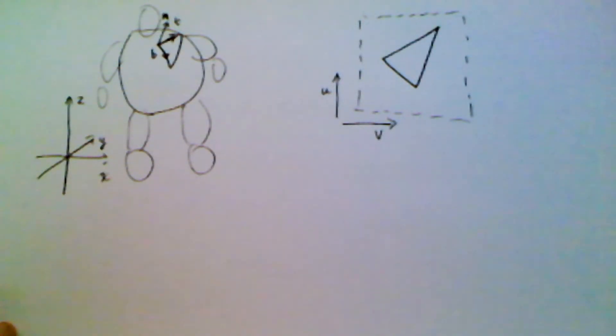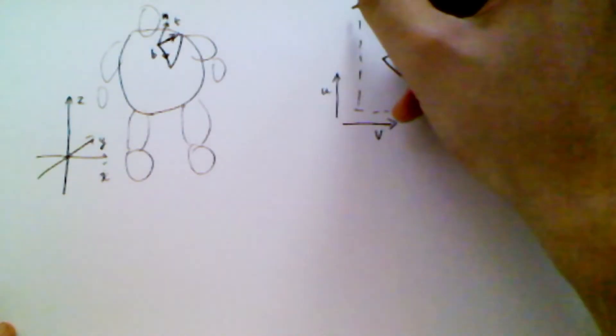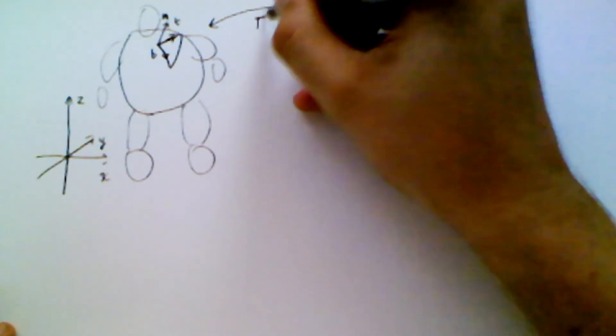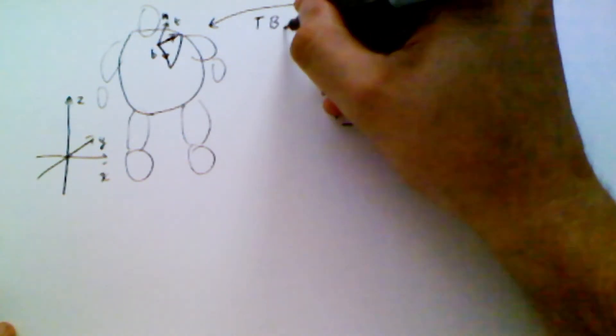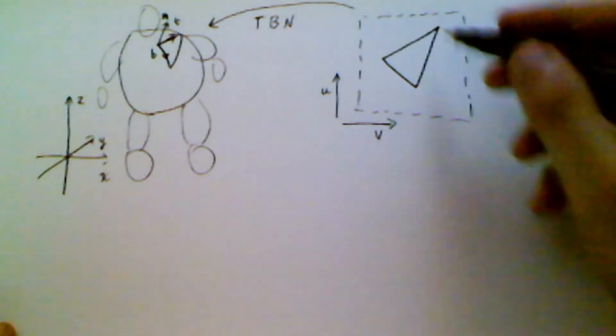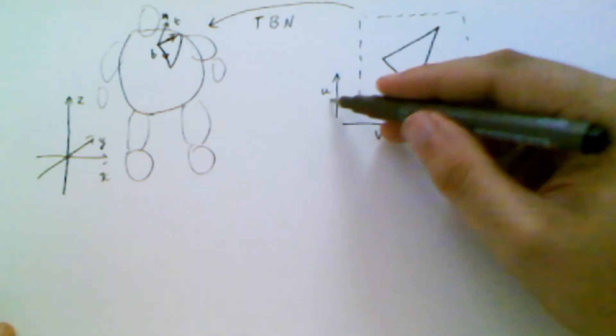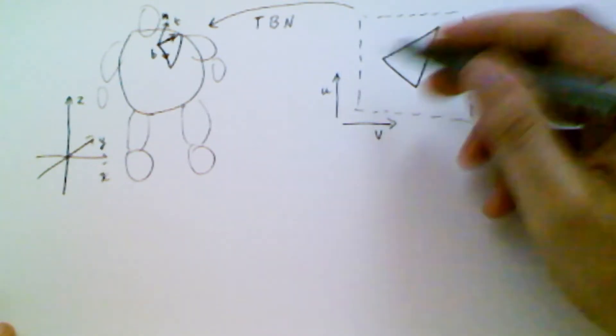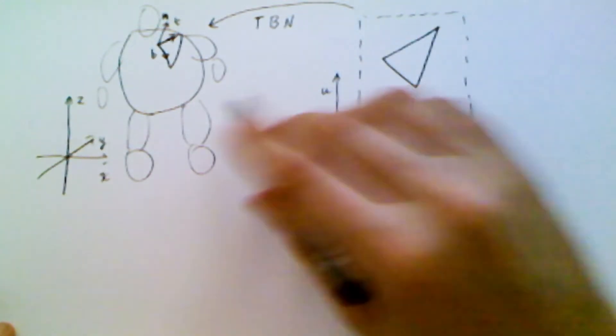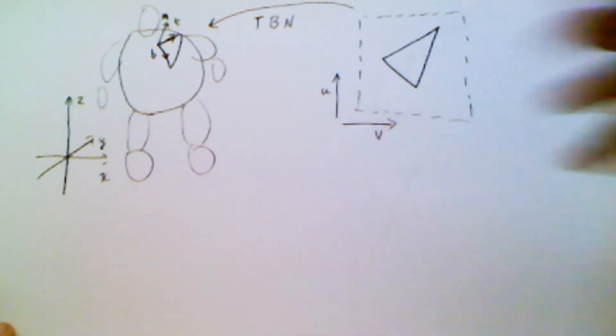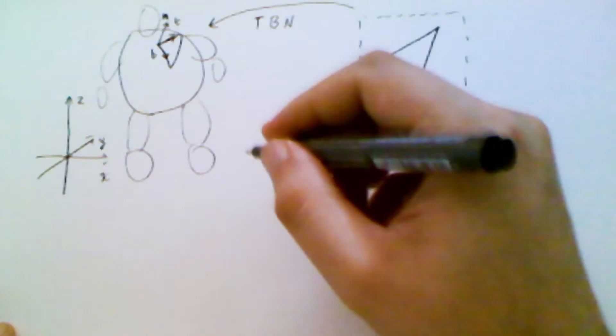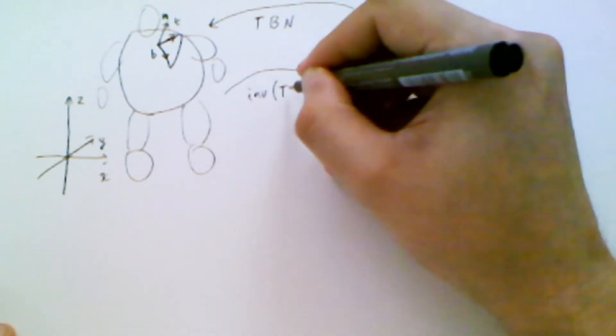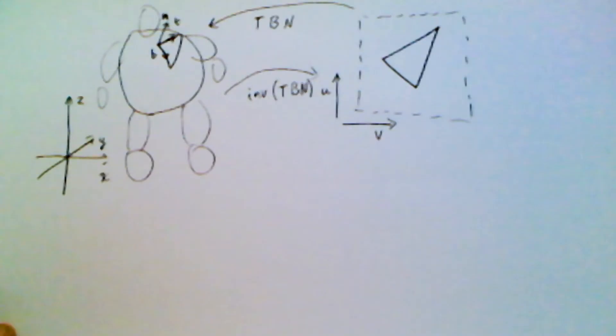Okay, and then we have some transformation matrices. So we have what's called a tangent bi-tangent normal vector, which maps the parameters u and v from texture space into world space. And then we go back the other way. So if we take the inverse, that'll get us back to texture space.